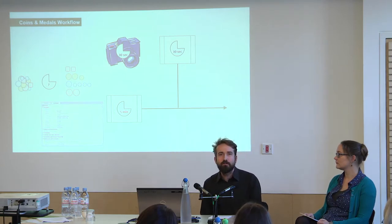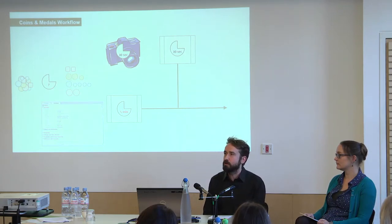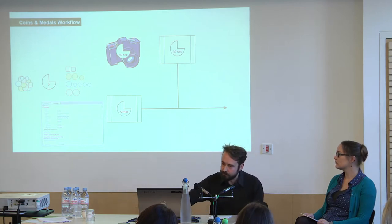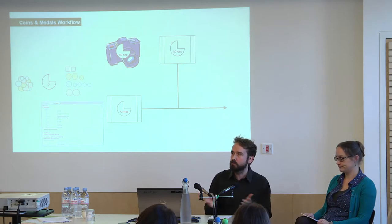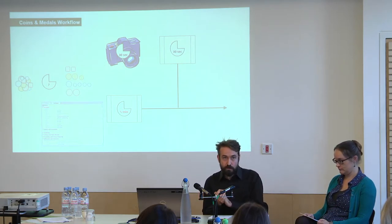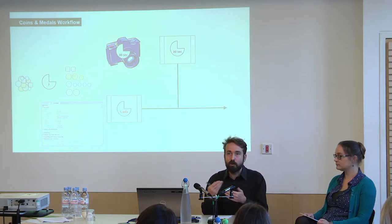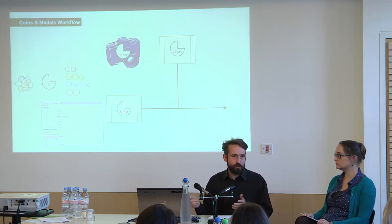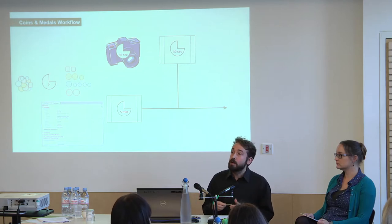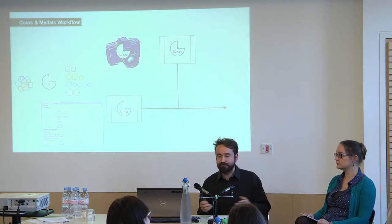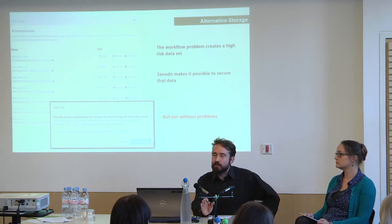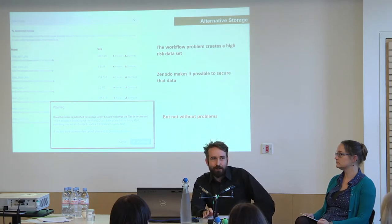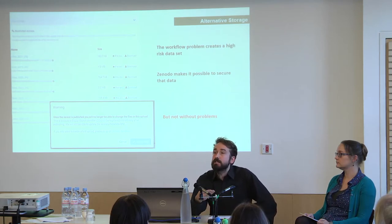How long it takes to order the coins depends on how much people already know about them and how much of a mess they're in. This creates an issue with our activity. For example, we held an event on the Huns recently — I spent five hours photographing every relevant Hunnic coin in the department. But to have created data records for them, remember we need both to get them online, would have taken about four weeks. So that hasn't been done.